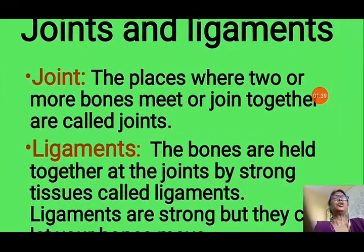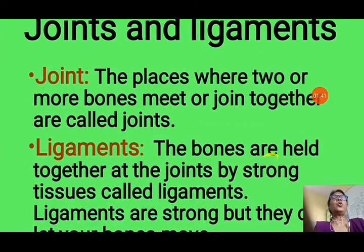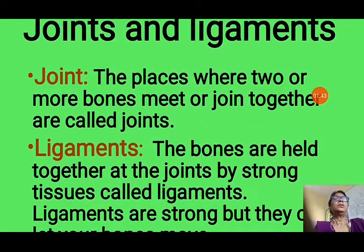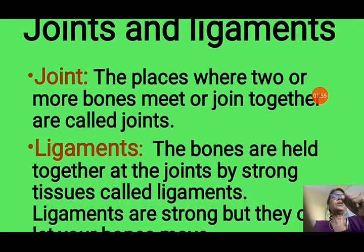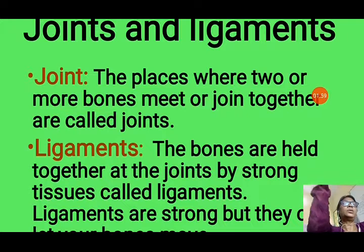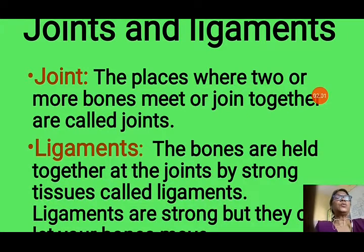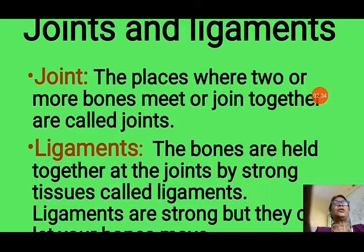Now we will discuss joints and the ribcage. The places where two or more bones meet or join together are called joints. For example, you can fold your fingers because there are many joints in them. Similarly, you can fold your hand because there is a joint. The places where two bones meet together are known as joints.